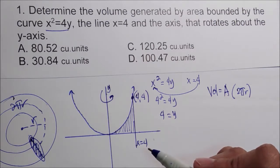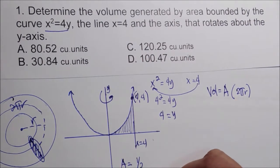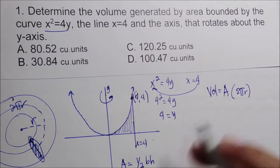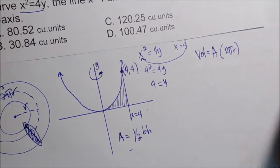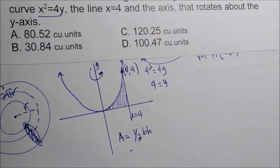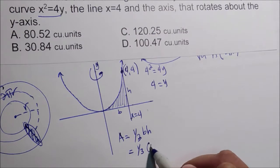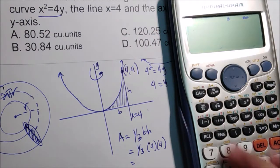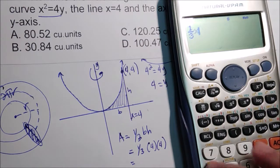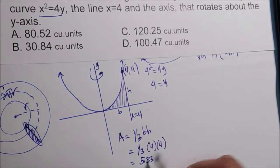Since we are dealing with a parabola, we can use the formula for the spandrel of a parabola. The area of the spandrel of a parabola equals one-third times base times height. Here, the base is 4 and the height is 4, so one-third times 4 times 4 gives an area of 5.33 square units.